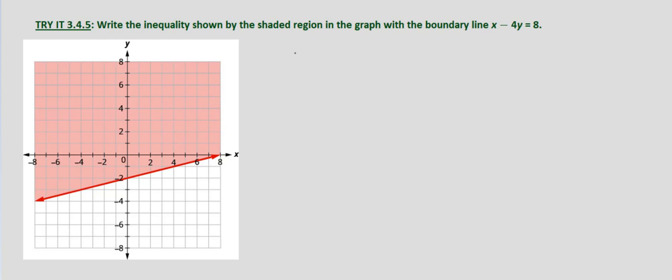We've got two options. It's going to be inclusive because it's a solid line, not a dashed line, so that means it's an inclusive inequality. Our two options are either x minus 4y is greater than or equal to 8, or x minus 4y is less than or equal to 8, because our boundary line is solid.